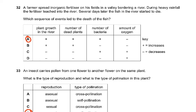Question 32: A farmer spread inorganic fertilizer on his fields in a valley bordering a river. During heavy rainfall the fertilizer leached into the river. Several days later the fish in the river started to die. Which sequence of events led to the death of that fish? Plant growth in the river, number of dead plants, number of bacteria, amount of oxygen decreased. Because what happens in eutrophication? Algae grow, algae die, more food for bacteria, bacterial numbers increase, bacteria respire, use up the oxygen in the water, fish start to die. So that is the sequence of events.